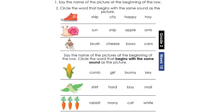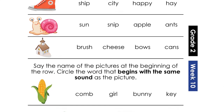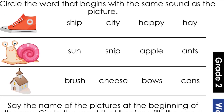In our exercise we are now going to read the words after the picture. We know that we have a shoe. Let's read the words that follow: ship, city, happy, hay. Which word sounds like 'shoe' at the beginning? If you said the word 'ship', well done, good job! Please circle the word 'ship' because it starts like our word 'shoe'. Ship — shoe.